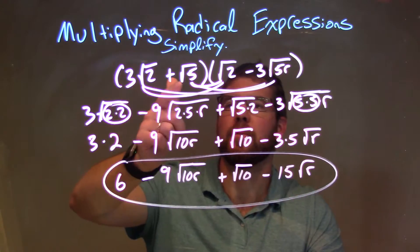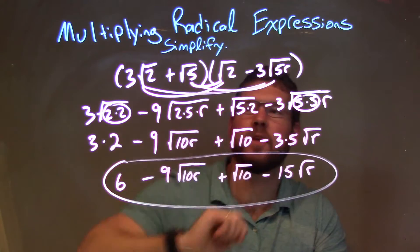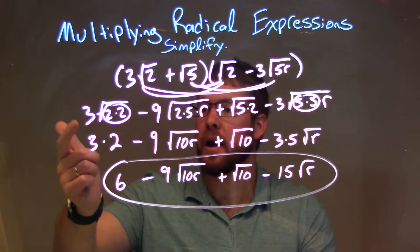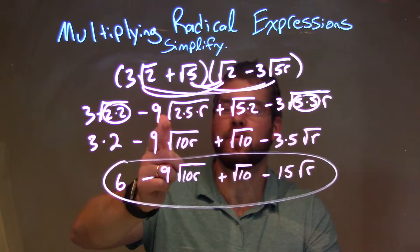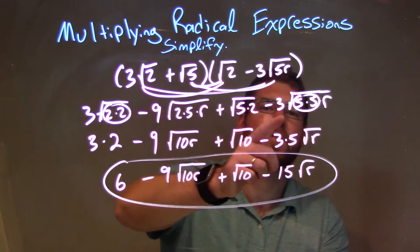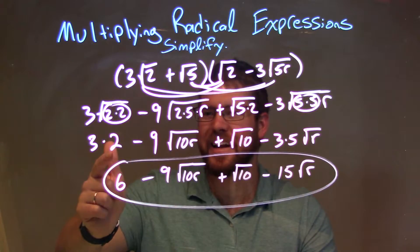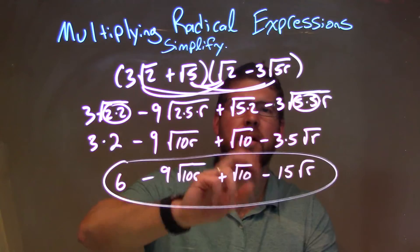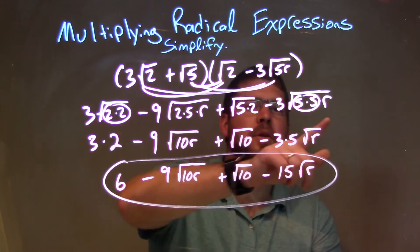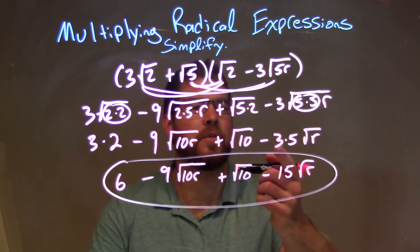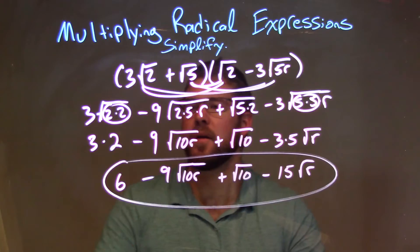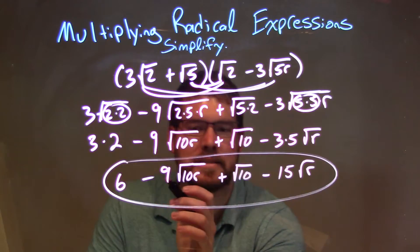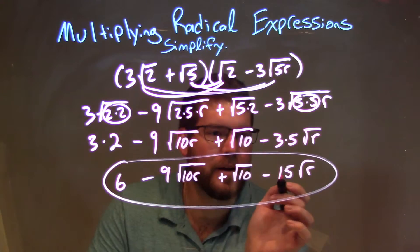Let's recap. We were given 3 square root of 2 plus square root of 5, times square root of 2 minus 3 square root of 5r. All parts of the first parentheses get multiplied by all parts of the second. Distributing across: 3 square root of 2 times 2, minus 9 times square root of 2 times 5 times r, plus square root of 5 times 2, minus 3 times square root of 5 times 5 times r. The pair of 2s brought an individual 2 outside, eliminating the square root. 2 times 5 couldn't simplify further, giving square root of 10r. The pair of 5s brought a 5 outside, giving minus 3 times 5 equals minus 15 square root of r, and 3 times 2 is 6. Final answer: 6 minus 9 square root of 10r plus square root of 10 minus 15 square root of r.